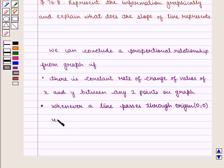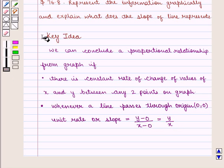then unit rate or slope is given by change in Y, that is Y minus 0, by change in X, that is X minus 0, and is equal to Y upon X. With this key idea, we proceed to the solution.